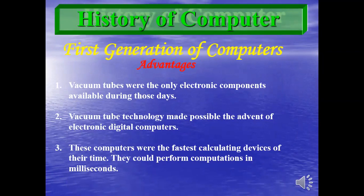Due to vacuum tube technology it was possible to manufacture computers. Third, these computers were the fastest calculating devices of their time — they were faster than anything available then, although vacuum tubes consumed a lot of electricity and emitted a lot of heat.